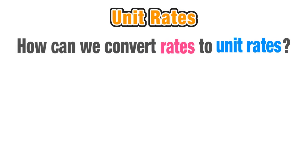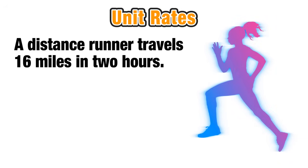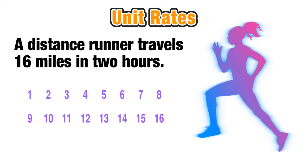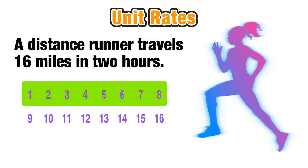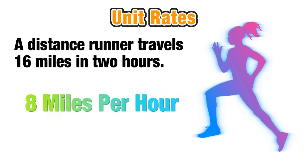In this lesson we want to explore how we can convert rates into unit rates. Let's start with an example of a distance runner who can travel 16 miles in two hours. If we lay out those 16 miles, we can see that in the first hour she travels 8 miles and in the second hour another 8 miles, since 16 divided by 2 is 8. The unit rate of her speed is 8 miles per hour — on average she travels 8 miles for every one hour of running.